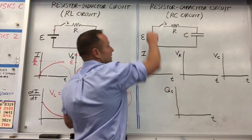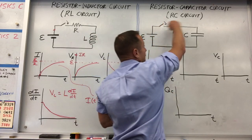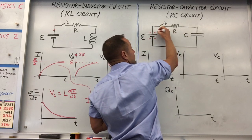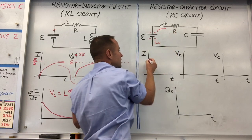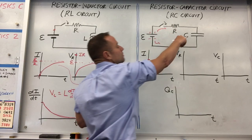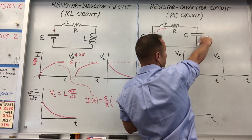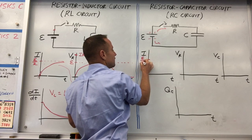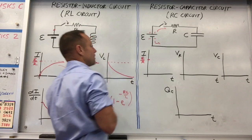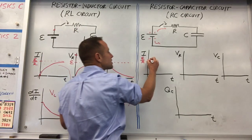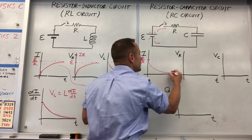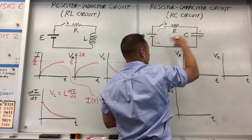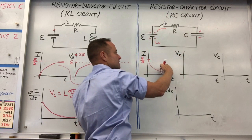The capacitor shows kind of the opposite behavior. When you first connect the circuit, the charge from the battery sees the empty plate and really wants to rush over, so the current starts really high. In the short term the capacitor acts like a wire. The current starts right away at V over R and then tapers down as the plates start to fill — the next bit of charge becomes more reluctant to get over there.